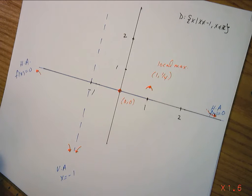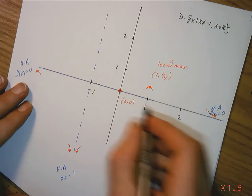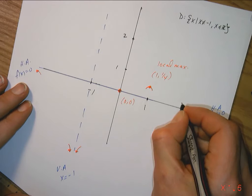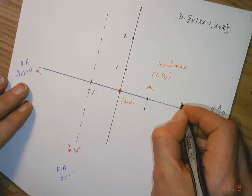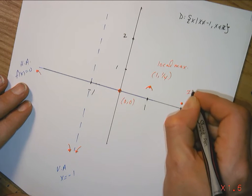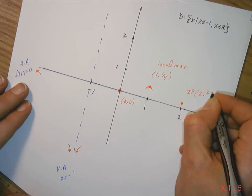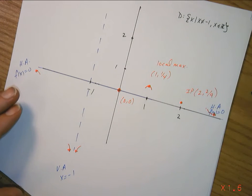I had an inflection point. I had an inflection point at 2 and 2 over 9. 2 over 9 is 0.22222. So, that's less than a quarter. So, let's put it roughly here. We'll call it IP for inflection point. And it's (2, 2 over 9).